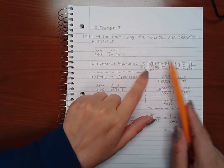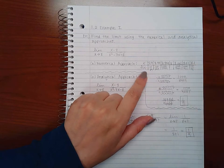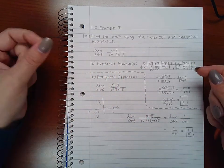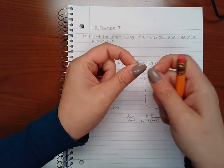So the numerical approach is to create a table. What I want to do is approach 8 from both sides, both from the left of 8 and from the right of 8.